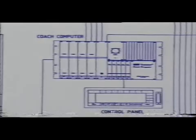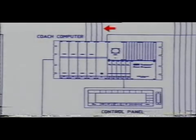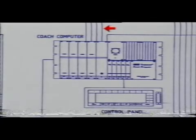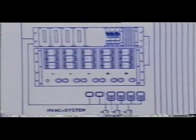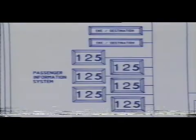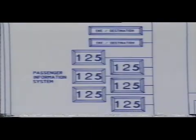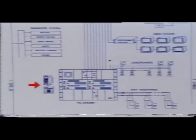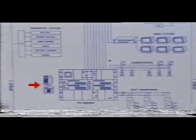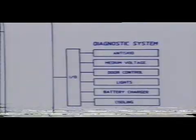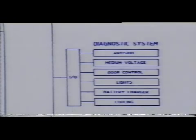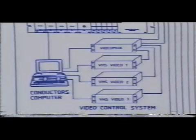These computers are linked to one another in a dual redundant data transmission network. Each computer carries out several functions: air conditioning, passenger information, public address system, diagnostics, and remote control video system.